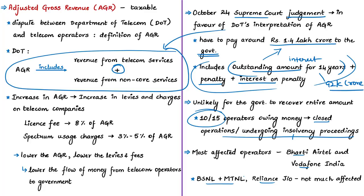Among the current players, Bharti Airtel and Vodafone Idea are worst affected, having to pay individually around ₹40,000 crores to the government. BSNL and MTNL together have to pay around ₹5,000 crores. The least impacted is Reliance Jio because it is a relatively new entrant — having entered the telecom market only in September 2016 — and has to pay around ₹14 crores. The telecom industry as a whole is already reeling under a debt of around ₹4 lakh crores.